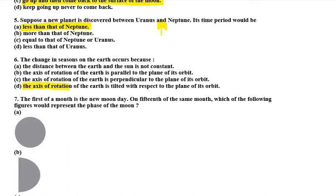Kyun hota hai, season kyun change hota hai earth pe? The axis of rotation of the earth is tilted with respect to the plane of its orbit.